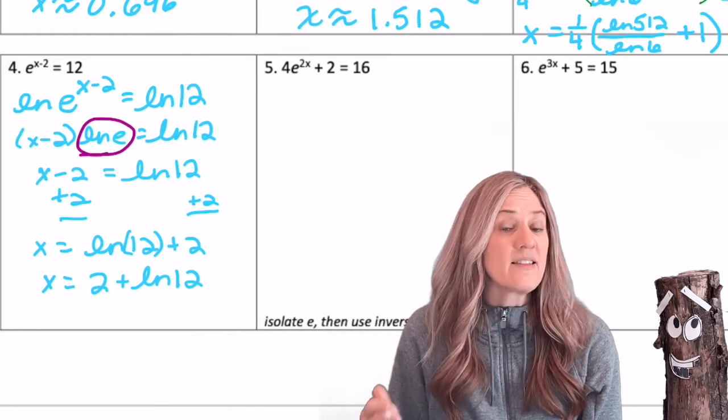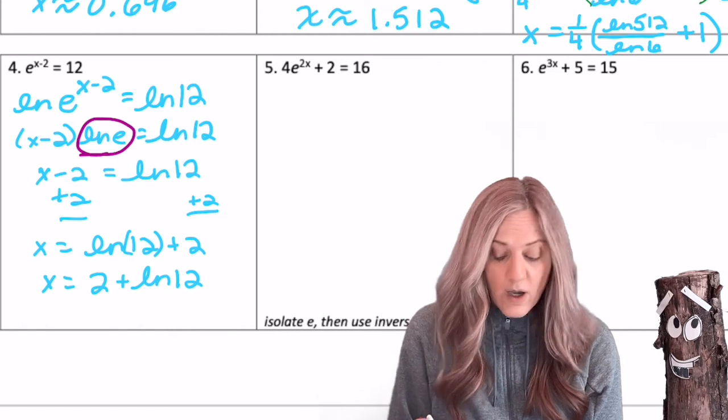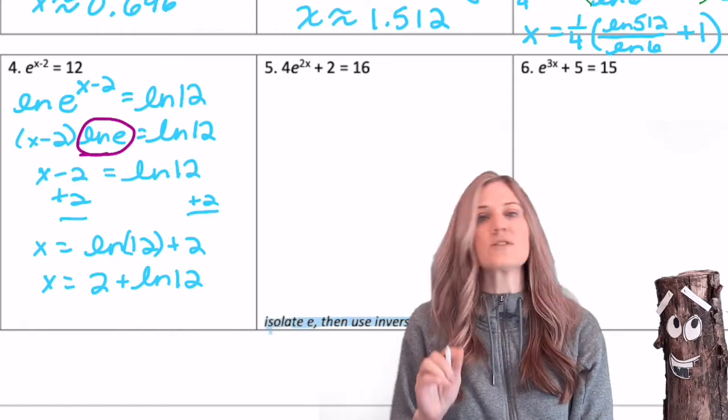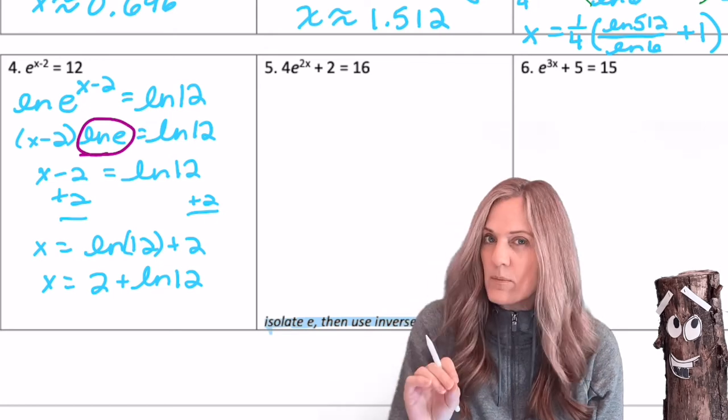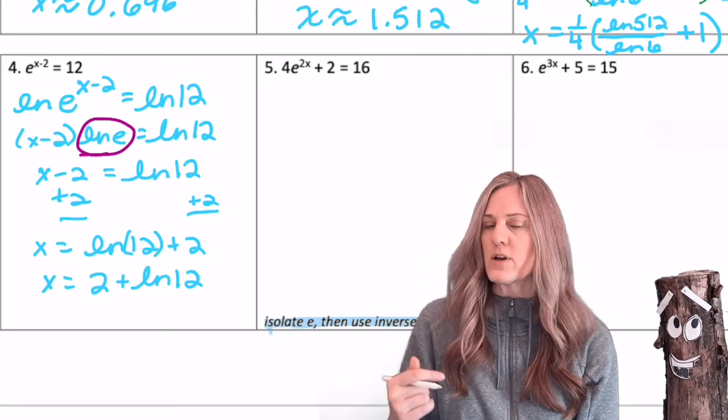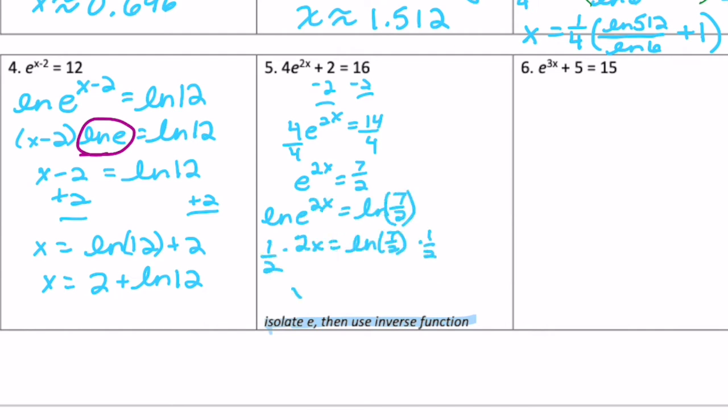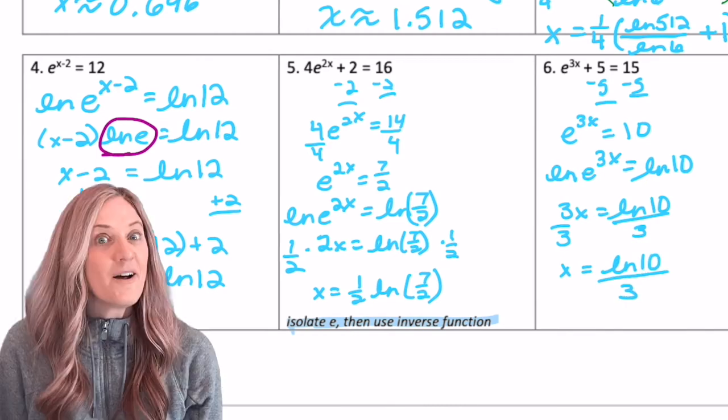I want you to try the next 2, but before you go, look down here. Isolate E, then use the inverse function. So you better move the 2 and the 4 before you take the natural log of both sides.